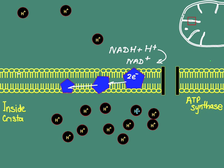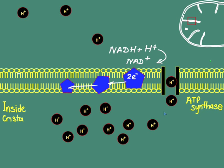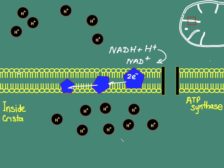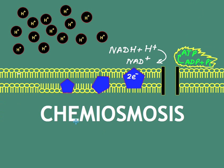Once this concentration is high enough, the hydrogen ions move through a special transmembrane channel which comprises the enzyme ATP synthase. As the ions flow from the high concentration built up inside the crista out into the matrix, ATP is produced from ADP and inorganic phosphate, with the use of the energy of the moving hydrogen ions — chemiosmosis. A very similar, if not identical, process happens across the thylakoid membranes of chloroplasts.